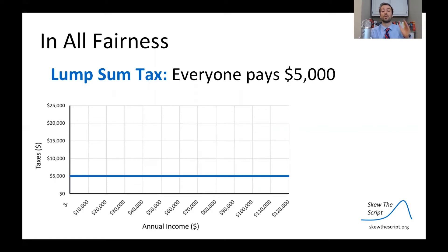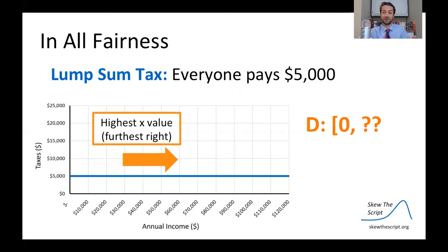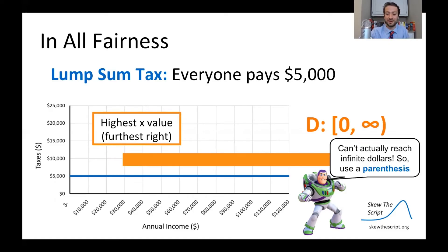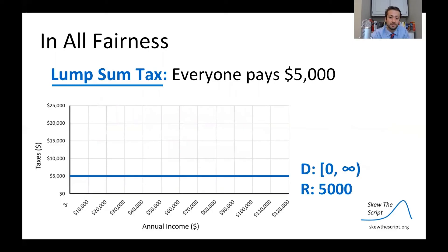Starting with the lump sum tax — everyone pays five thousand dollars. We plot how much everyone pays: income is on the x-axis and amount of taxes paid is on the y-axis. It's a straight horizontal line. The domain's lowest x-value is zero, and the highest keeps going — this goes essentially to infinity. So we use the infinity sign with a parenthesis. The range is simpler: there's just one y-value, five thousand, so the range equals five thousand.